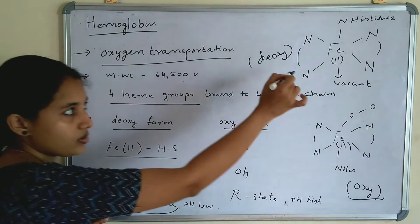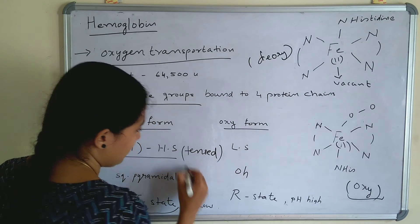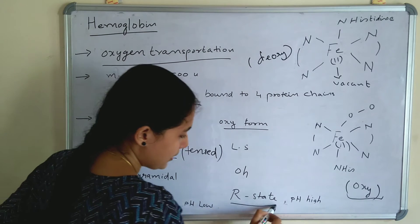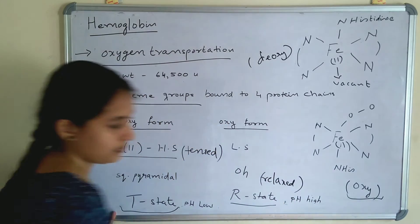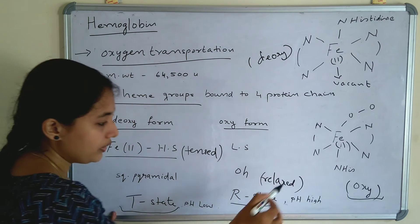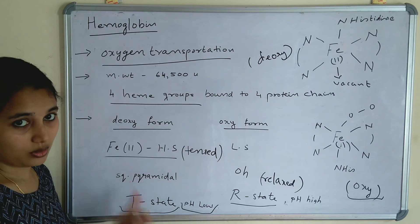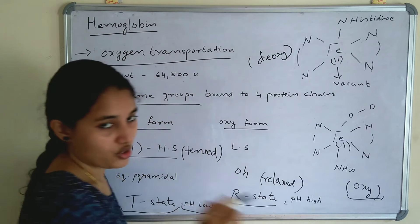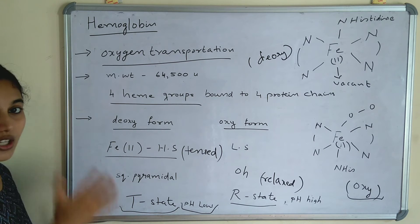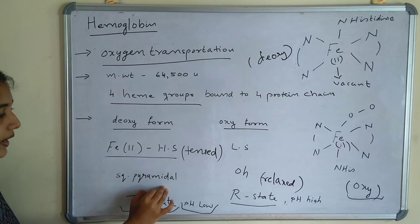The deoxy form is called the T state — T means tensed. So the deoxy form is called the T state or tensed state, and the oxy form is called the R state or relaxed state. In the deoxy form, the pH is low, while in the oxy form, pH is high. When lactic acid is produced, the pH will be low — that relates to the deoxy form. So in deoxy: pH is low, T state, square pyramidal geometry, high spin. In oxy: pH is high, R state, octahedral geometry, low spin.